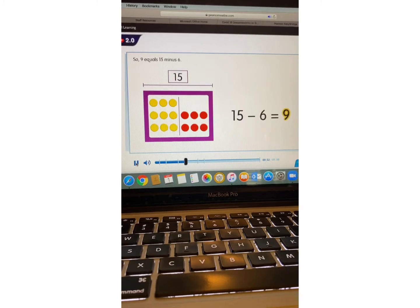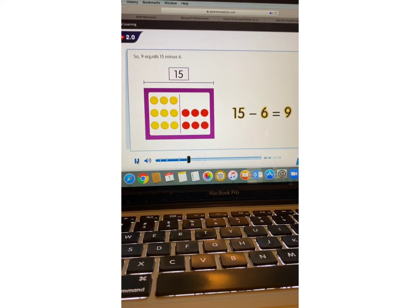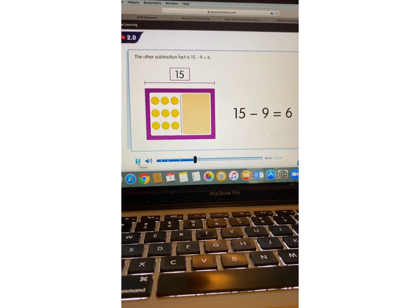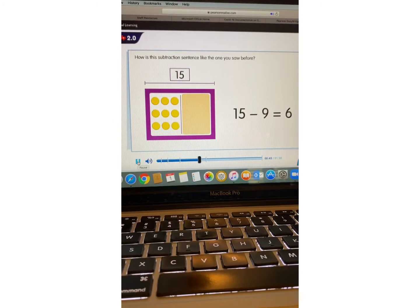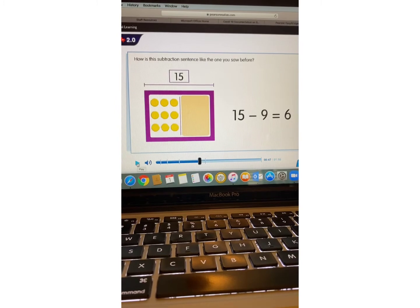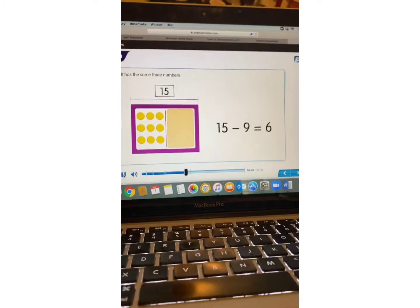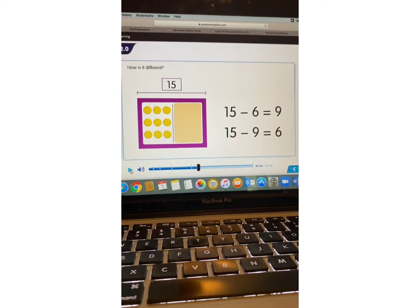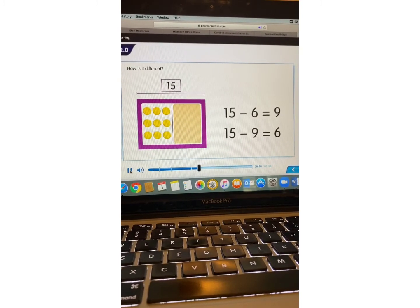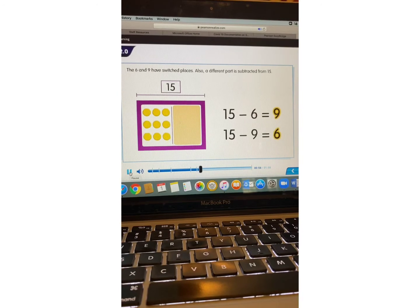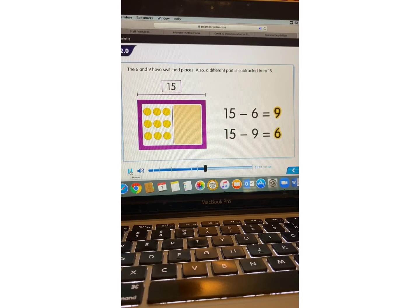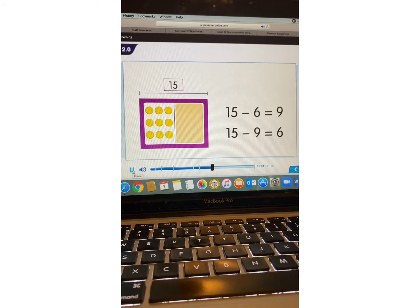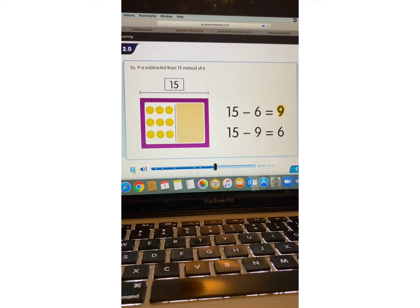9 is the part that's covered. So 9 equals 15 minus 6. The other subtraction fact is 15 minus 9 equals 6. How is this subtraction sentence like the one you saw before? It has the same three numbers. How is it different? The 6 and 9 have switched places. Also a different part is subtracted from 15. Subtract the other part from the whole. So 9 is subtracted from 15 instead of 6.